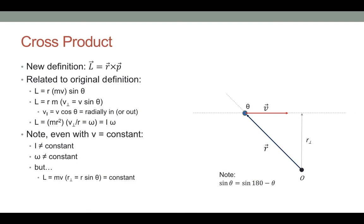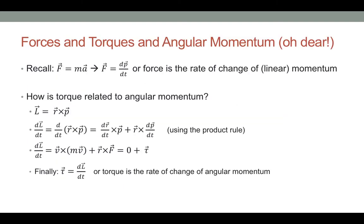An object moving in a straight line at constant velocity has constant angular momentum, which makes sense because no torques are being applied to it. When we did linear momentum, we rewrote F equals ma to say force is the rate of change of translational momentum. Now we can ask: is angular momentum related to torque in the same way — is torque the rate of change of angular momentum?